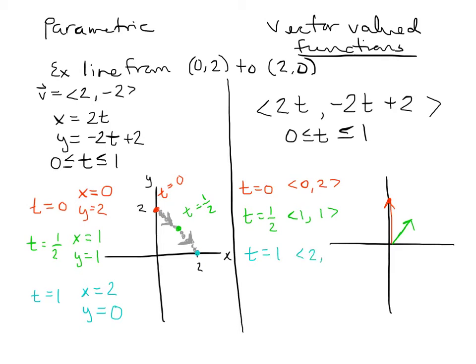At t equals 1, I get the vector (2, 0), which goes two in the x and zero in the y. This is a pretty subtle difference: parametric equations give you a little particle that traces out the curve, while vector-valued functions give you vectors that point to the point tracing out the curve. They describe the same thing — vector-valued functions are just written in vector form versus parametric equations written out as x equals, y equals, z equals.